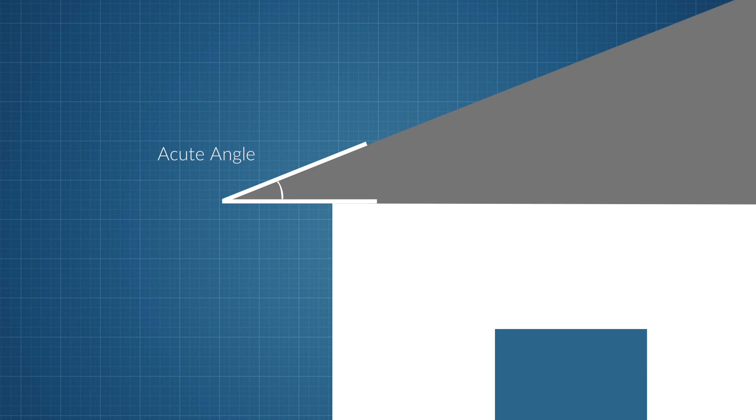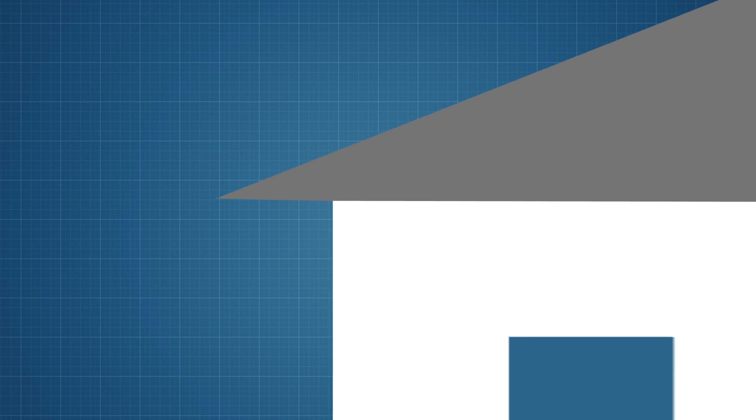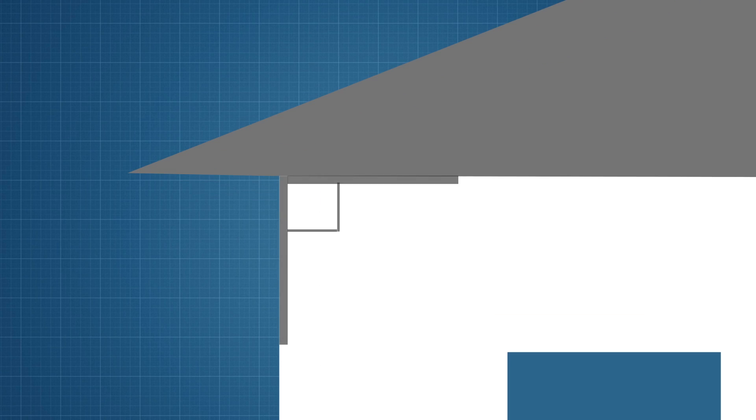You can see the corner of the house is a right angle. It is exactly 90 degrees.